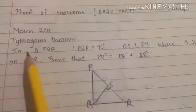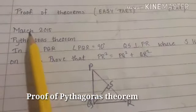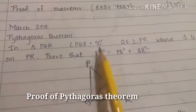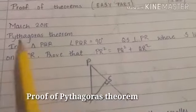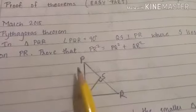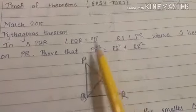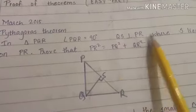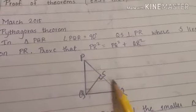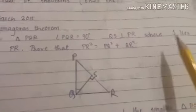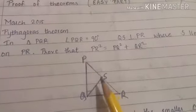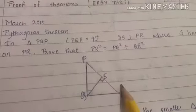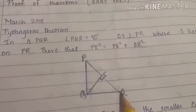The first theorem we are going to learn is Pythagoras theorem. I've taken the question as-is from the board paper 2015. In triangle PQR, angle PQR is equal to 90 degrees. QS is perpendicular to PR, where S lies on PR. We have to prove that PR² = PQ² + QR².